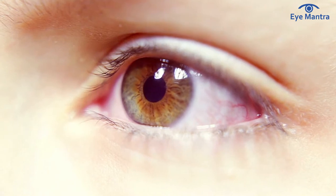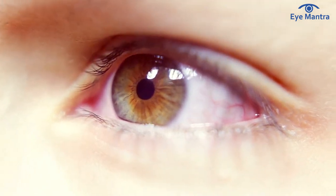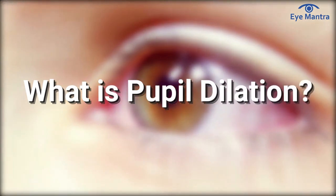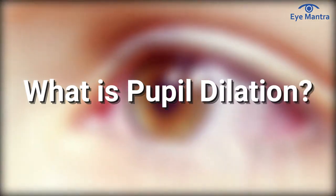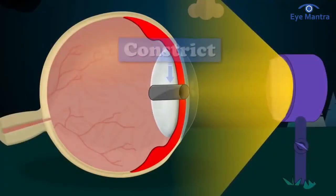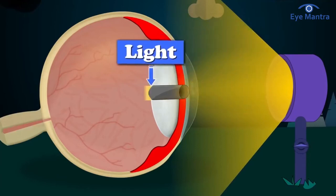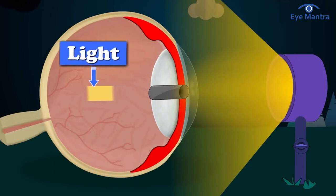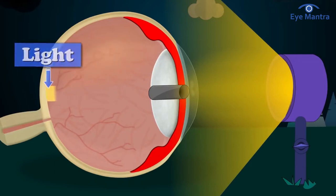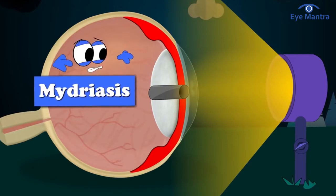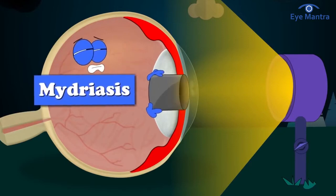Let's begin with understanding what pupil dilation is. If your pupils are significantly larger than average, you have dilated pupils. A dilated pupil can sometimes still react to light — that is, get smaller in bright light or when a light is shined at the eye — but typically, dilated eyes don't respond normally to light. It is also known as mydriasis in medical terms.